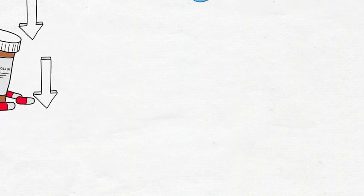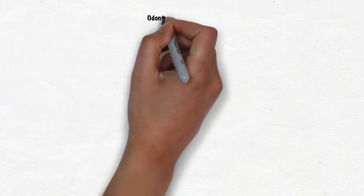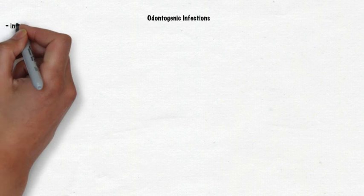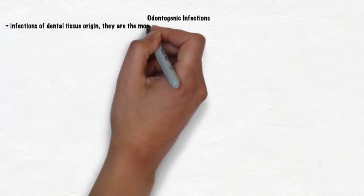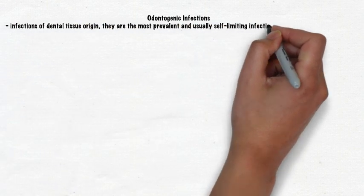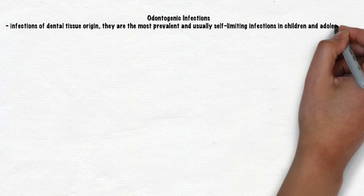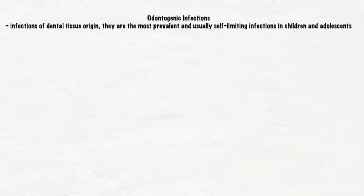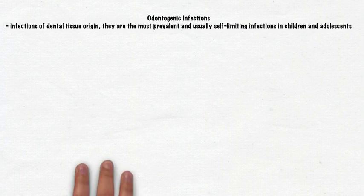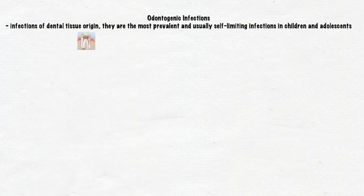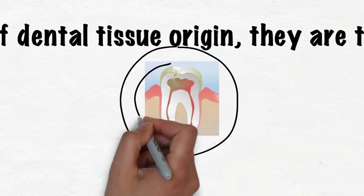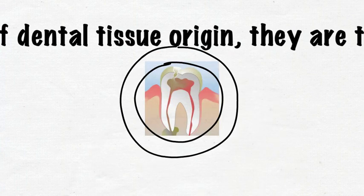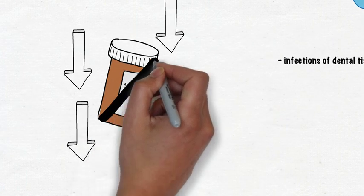Let's start by defining a few of the more common types of oral infections that present in both the pediatric and adult population. First and foremost, what is an odontogenic infection? Odontogenic infections are defined as infections of dental tissue origin. They are most prevalent and are usually self-limiting infections in children and adolescents. Most odontogenic infections are contained to a localized area and do not warrant the use of antibiotics for treatment.